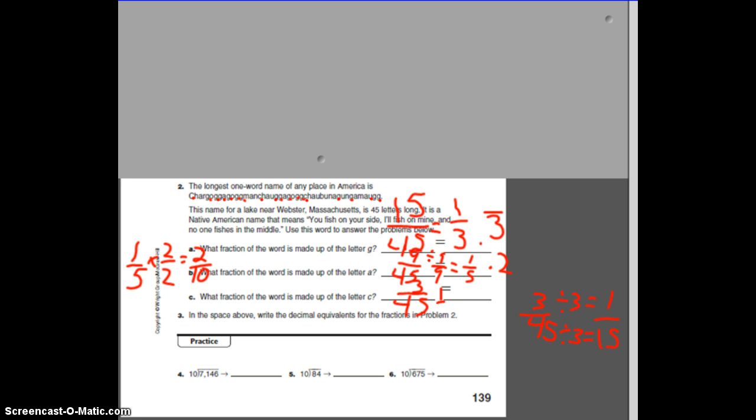1 fifteenth is our equivalent fraction. And 1 fifteenth, we need to change that to something that we can change to a decimal. What can we multiply 15 by? Nothing. It's not an easy one to multiply by, so I'd say go ahead and get your calculator.